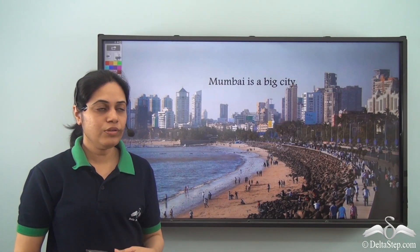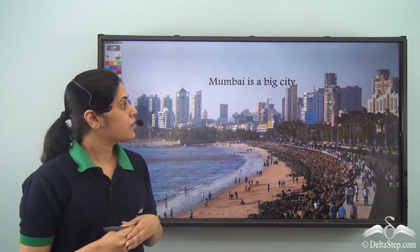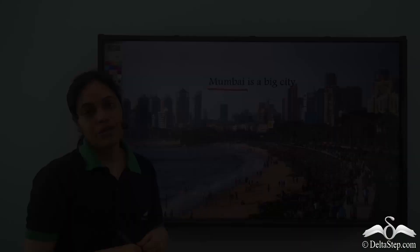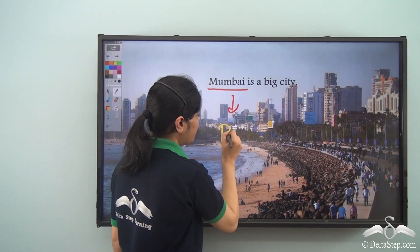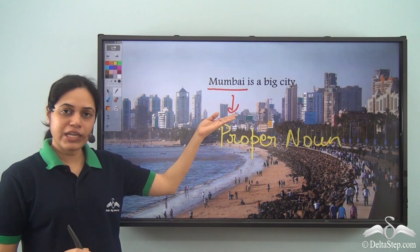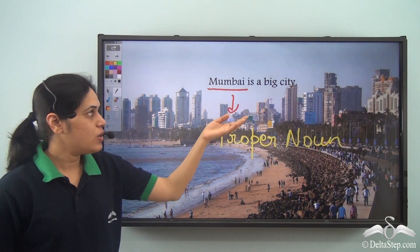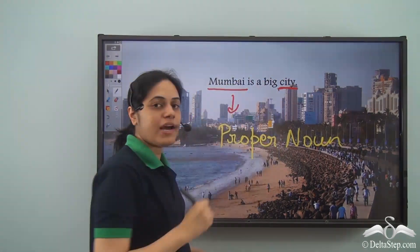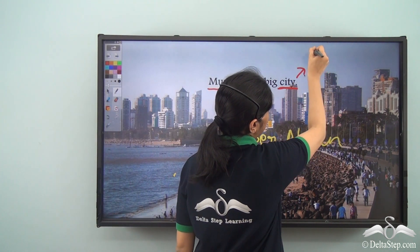Now can you answer this on your own? 'Mumbai is a big city.' Can you identify the proper noun and the common noun in this sentence? Mumbai is a place — it is the name of a place, hence it is a noun. When I say Mumbai, it refers to one specific city, so Mumbai is a proper noun. Is, a, big are not naming anything. What about city? City is again the name of a place, but it does not specify which city we are talking about — there are many cities. So city is the general name, and city is a common noun.